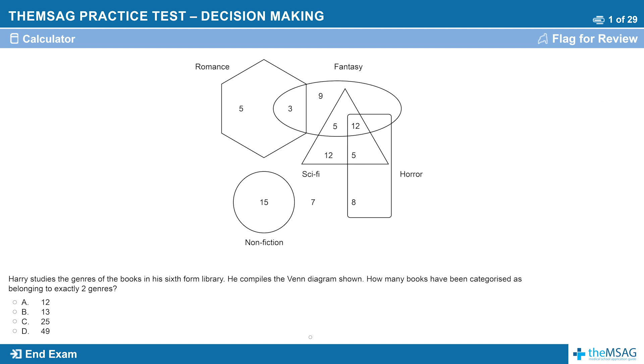Question 1: Harry studies the genres of books in his sixth form library. He compiles the Venn diagram shown. How many books have been categorized as belonging to exactly two genres? 12, 13, 25, or 49?